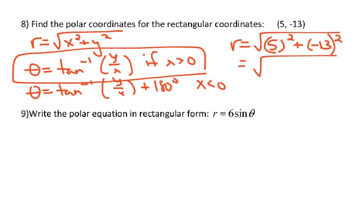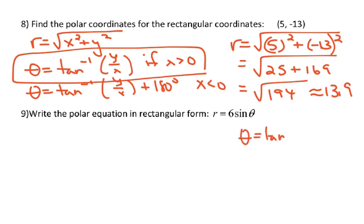So r is going to be the square root of 5 squared plus negative 13 squared. Notice I put it in parentheses because you better get positive 169. And so I'm going to get 194, and the square root of 194 is about 13.9. And then for theta, we're going to do the inverse tangent of negative 13 over 5. So the inverse tangent of negative 13 over 5 is going to give me about negative 69 degrees. So the polar coordinate is 13.9 comma negative 69 degrees.